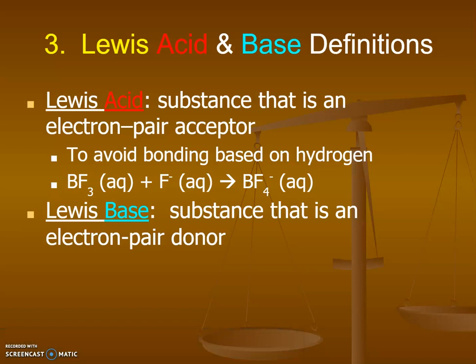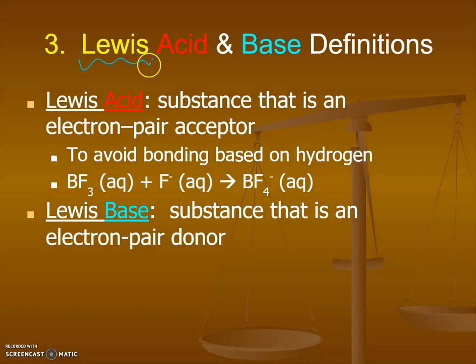Just as we can talk about everything in terms of protons, we can also talk about everything in terms of electrons. That's where we start getting into Lewis acids and bases. Remember Lewis who did the Lewis dot structures? Those use dots to represent electrons. Well, you can talk about acids and bases in terms of electrons as well. A Lewis acid is a substance that is going to be an electron pair acceptor.